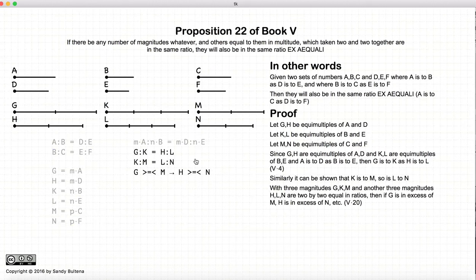But if you recall from Proposition 20, if we have ratios such that G to K is equal to H to L, and K to M is equal to L to N, then if G is greater than M, H would be greater than N. If G was equal to M, H would be equal to N. And finally, if G was less than M, H would be less than N. This relationship right here.